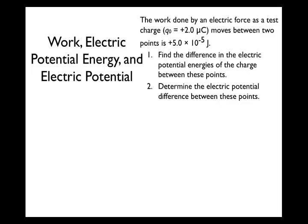Let's solve a problem based on the definitions we've built. In this situation, the work done by an electric force as a test charge of two micro-coulombs moves between two points is 5 × 10⁻⁵ joules. We want to find the difference in electric potential energies of the charge between these points and determine the electric potential difference between them.